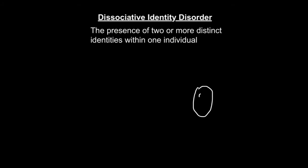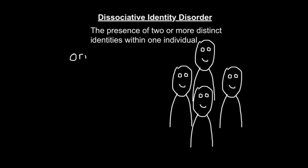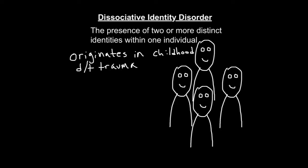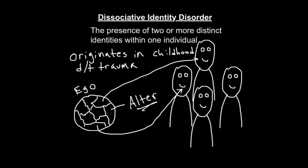Dissociative identity disorder is the presence of two or more distinct identities within one individual. It originates in childhood as a result of chronic trauma, usually in the form of child abuse, especially sexual. In attempts to cope with the horror of reality, the child's ego splits through the dissociative process. Each trauma-induced dissociative experience shapes the development of alters. Chronic abuse leads to a fixation of the dissociated ego splits. Through dissociation, the child may view the abuse as if it were occurring to someone else, like in a movie.